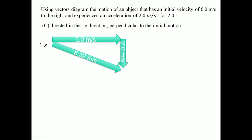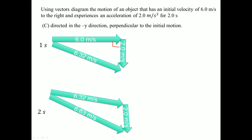If the acceleration is perpendicular to the motion, you apply the Pythagorean theorem — the resulting velocity is 6.2 meters per second. For other angles you would use the law of cosines, but you're never going to be asked something that complex.